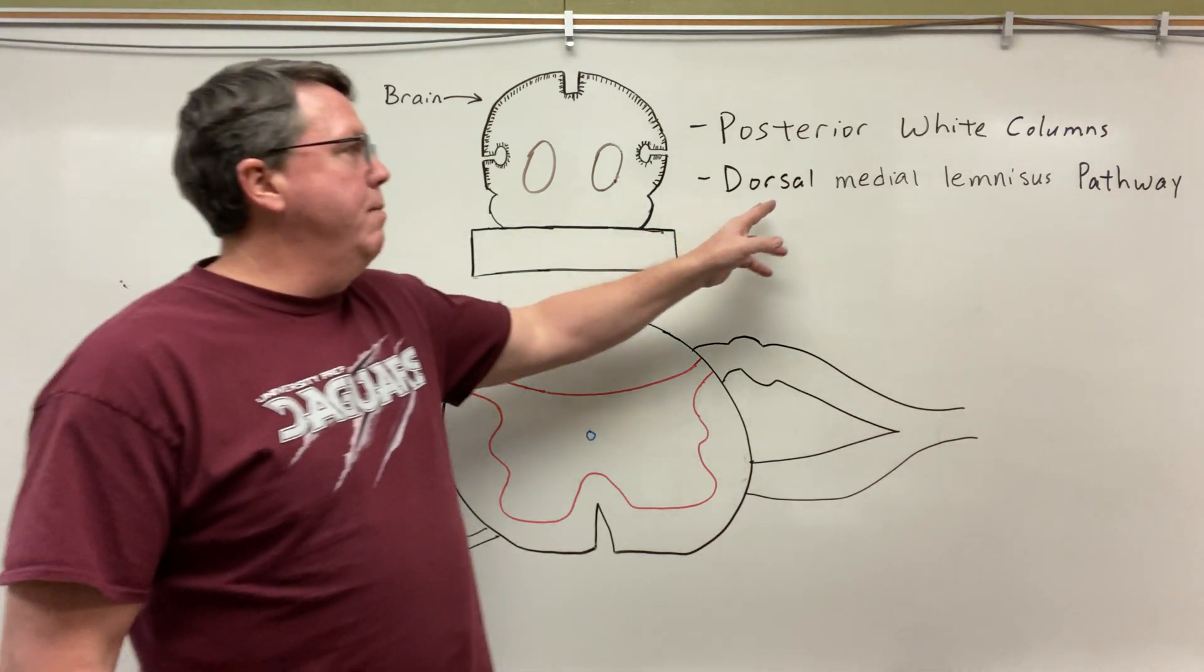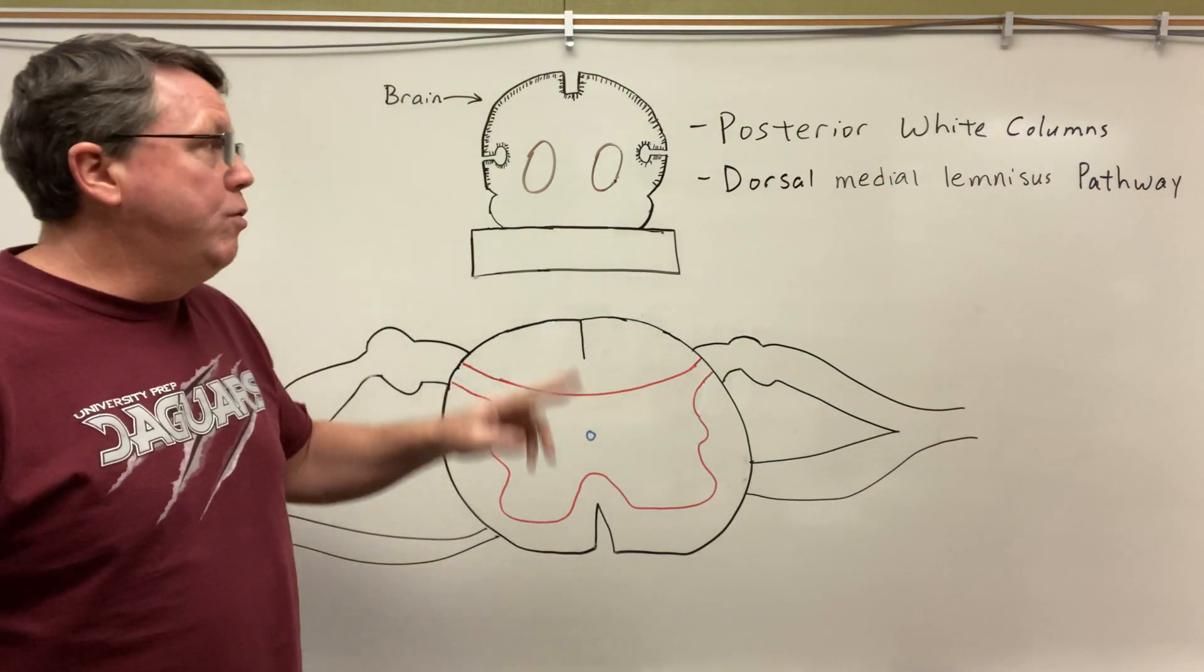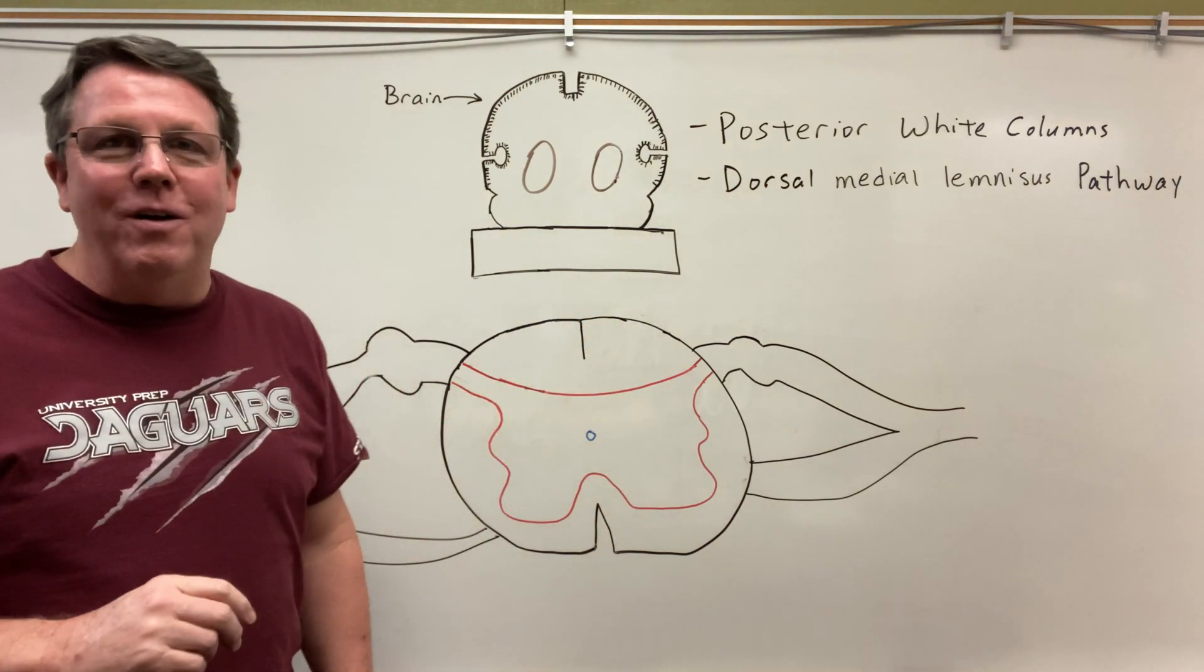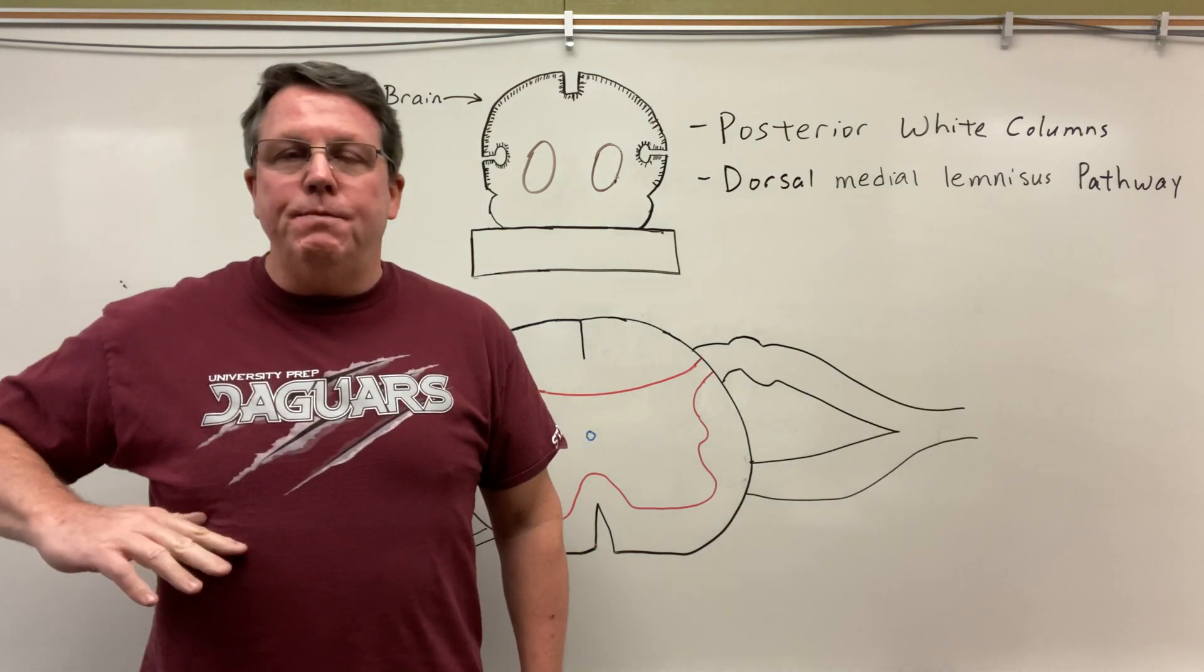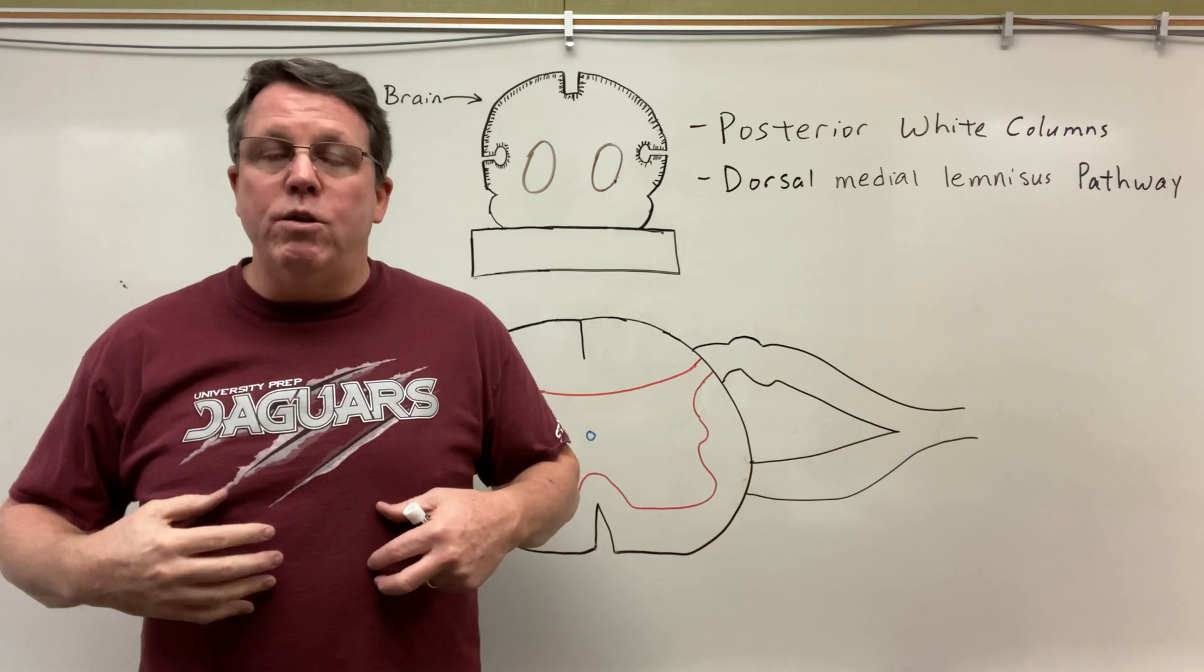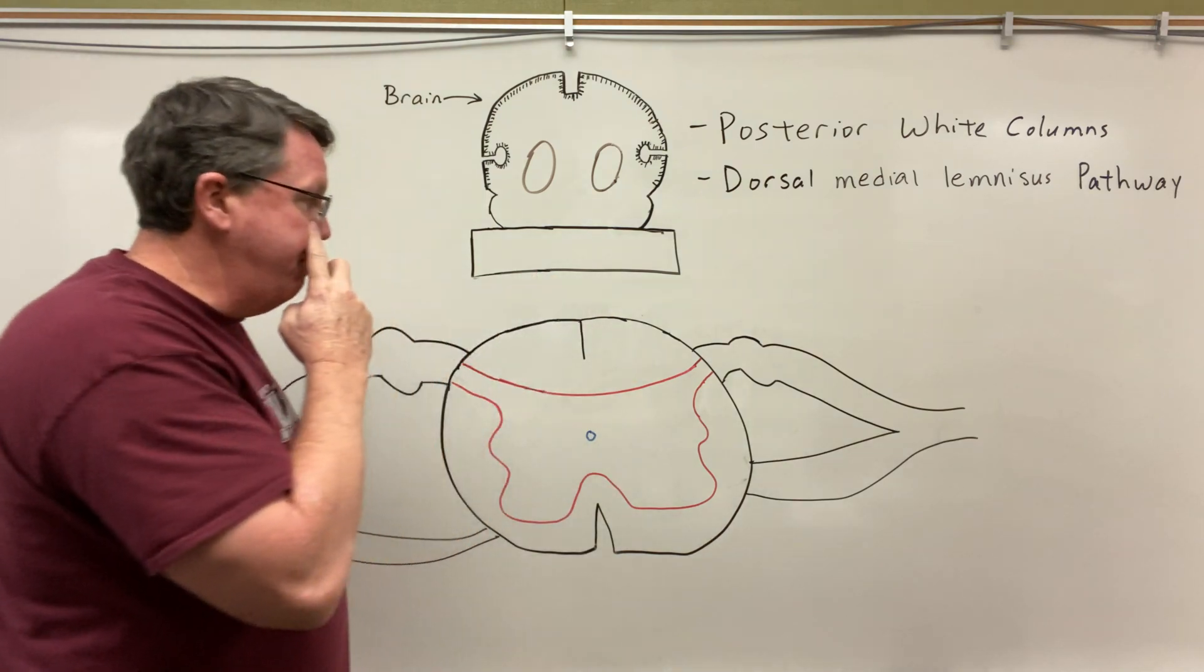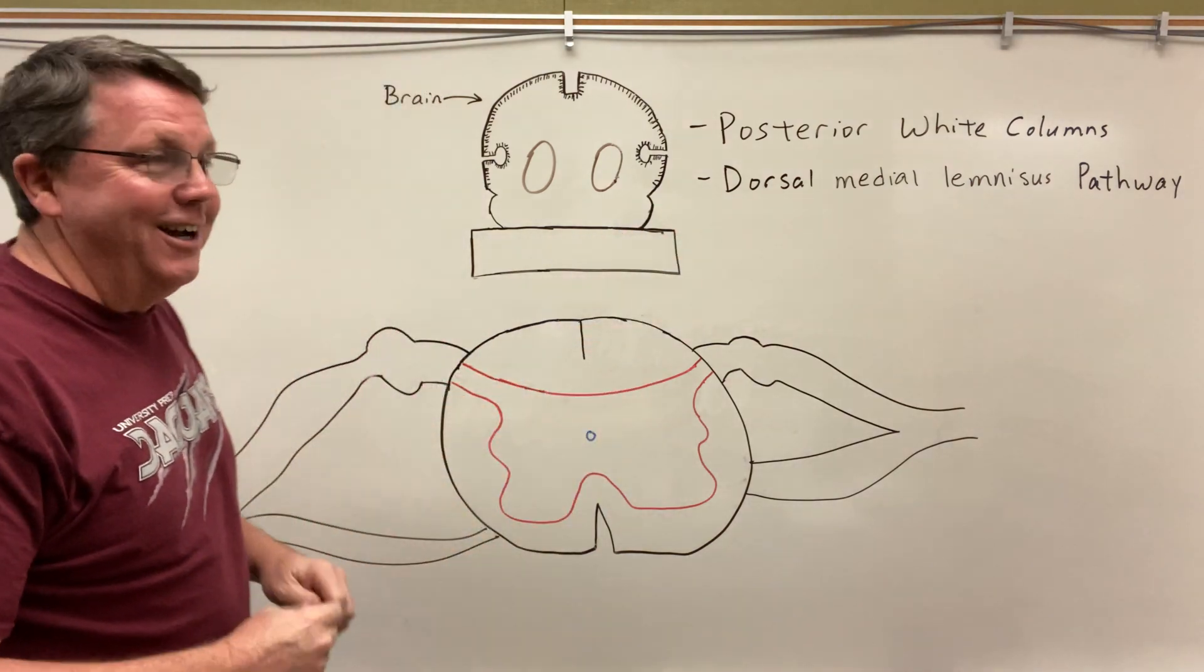Hi everybody. So today we're going to be talking about the dorsal medial lemniscus pathway. The dorsal medial lemniscus pathway is located in the posterior white columns of the spinal cord. To give you an idea of what we're looking at here, imagine we slice my body in half and you're looking down at me. That's the way you would see my spinal cord if you're looking from the top down. This would be the front of my spinal cord and then this would be the back.